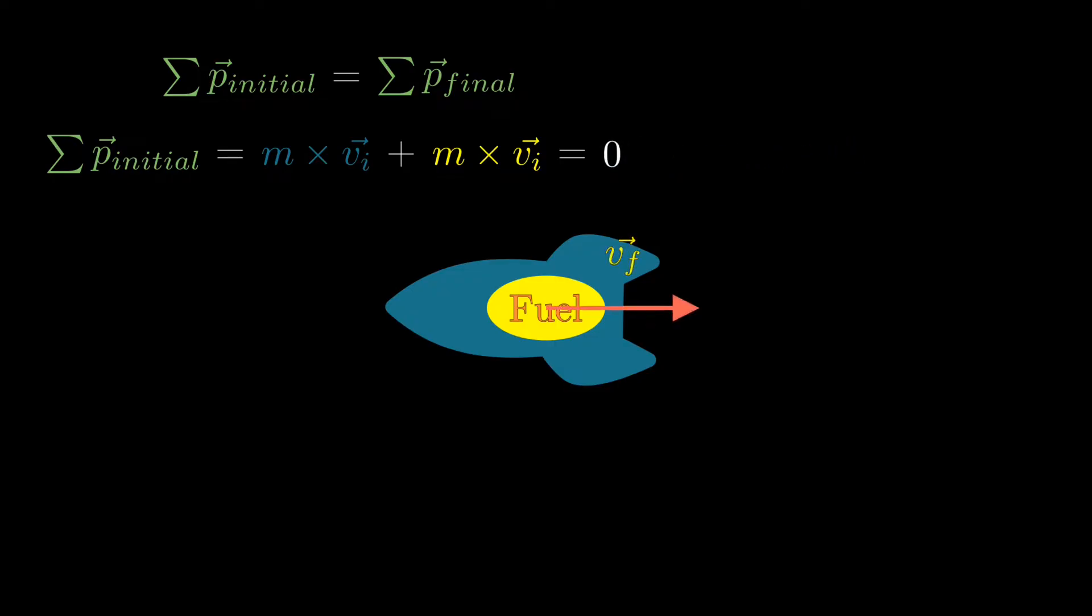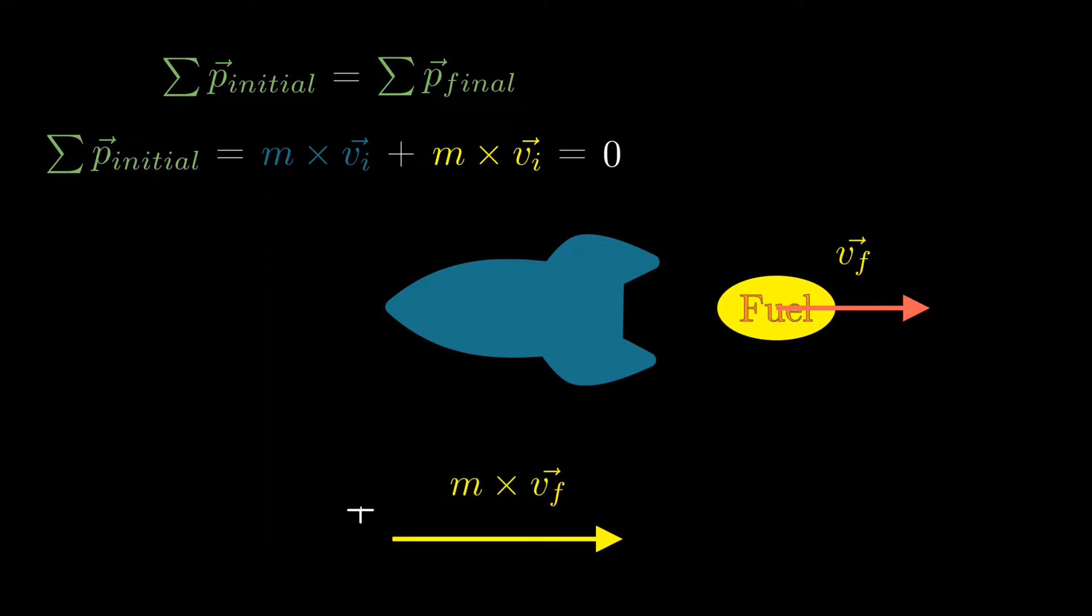But when the engine burns, the fuel will gain velocity and momentum. Thus, the rocket body has to gain its own momentum having the same magnitude and opposite direction, so that their vector sum will be equal to zero and follow the law of conservation of linear momentum.